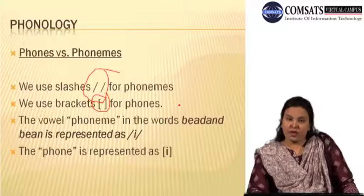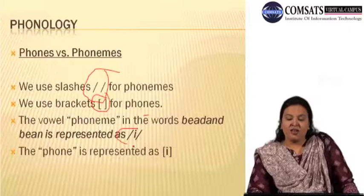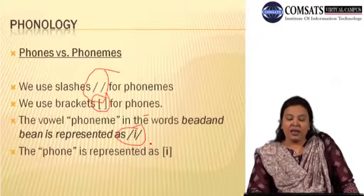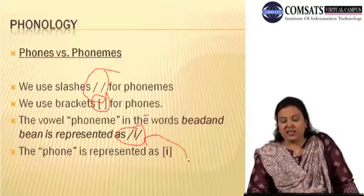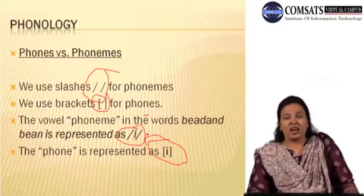For example, the vowel phoneme in the words 'bead' and 'bean' is represented with slashes — this is the phonetic representation of the phoneme, the 'ee' vowel as phoneme between two slashes /iː/. But if we represent the phone, the 'ee' vowel, then this is the representation for phone inside square brackets [iː]. So with slashes we have phonemes, and with square brackets we have phones.